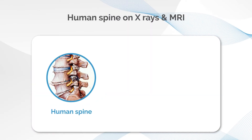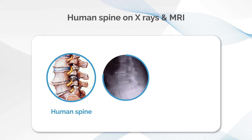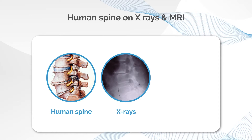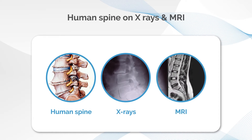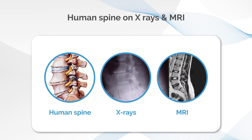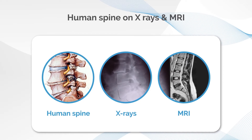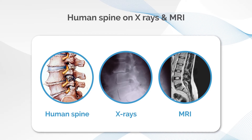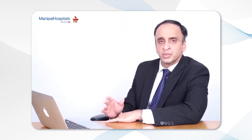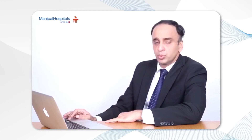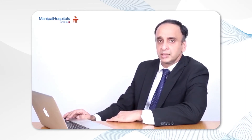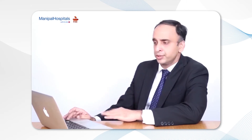The human spine appears one way in reality while an X-ray shows only the bones of the spine. An MRI gives far better images — you can see the bones, separate the discs, see the nerves, and identify innumerable other problems that cannot be seen on an X-ray. To unravel the mystery of back pain, slipped disc, and sciatica, the MRI scan is an essential tool.